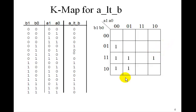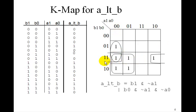Okay, so again, we're going to have three circles. This one, this one, and another wraparound. So what do we have here? We have B1 and not A1. Here we have B0 and not A1 and not A0. And for the wraparound, we'll have B1 and B0 and not A0. Okay, so now we've got the logic equations for A less than B.